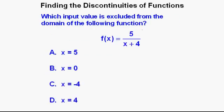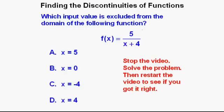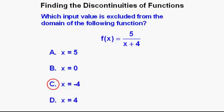Next problem: Which input value is excluded from the domain of f(x) = 5 / (x + 4)? Stop the video, solve, then restart to check. The correct answer is C — when x equals negative 4, because that's the value that makes the denominator zero and therefore the function undefined.